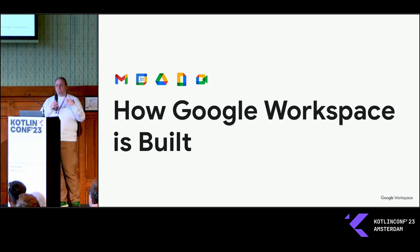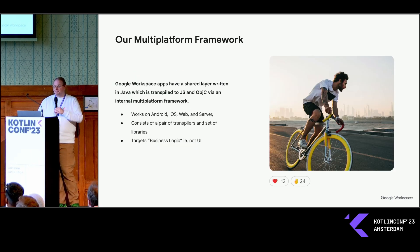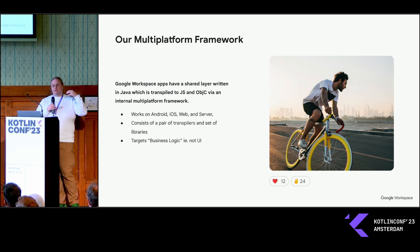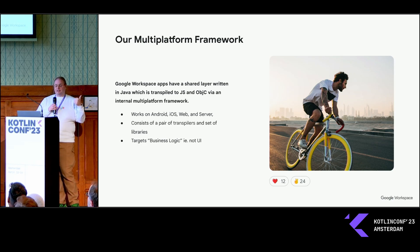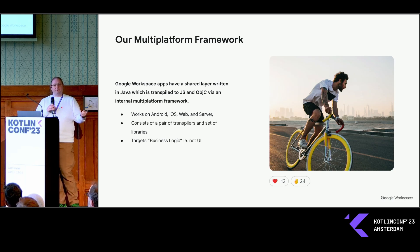How do we build our Workspace apps? Our Workspace apps are built with a shared layer written in Java, and we have a pair of specialized transpilers that translate that Java into JavaScript and Objective-C using an internal framework. That code runs on Android, iOS, web, and server. On Android and server, that code runs natively in Java. On iOS, we use a transpiler called J2 Objective-C that's open source. And on web, it's J2CL — another open source transpiler.